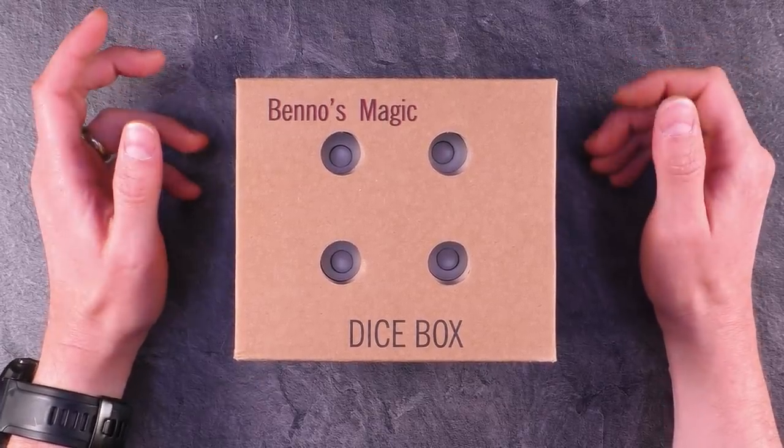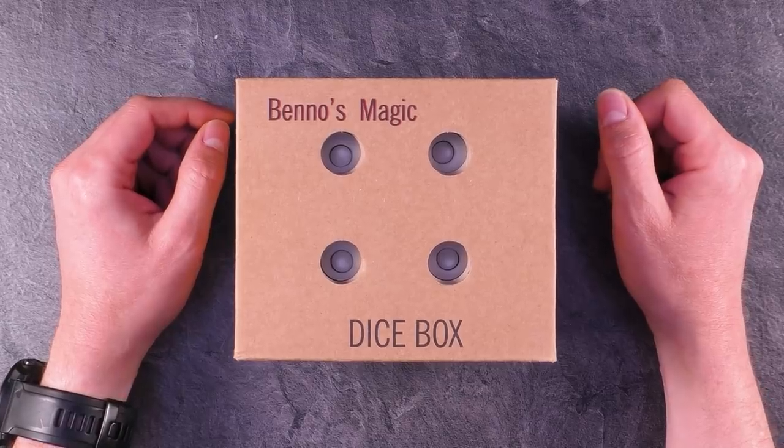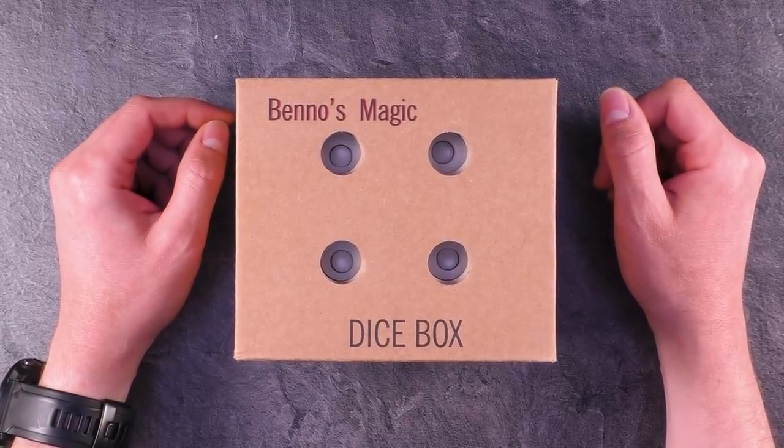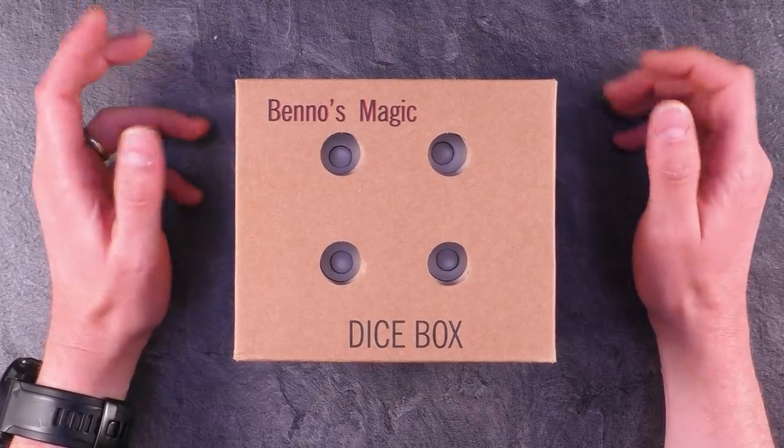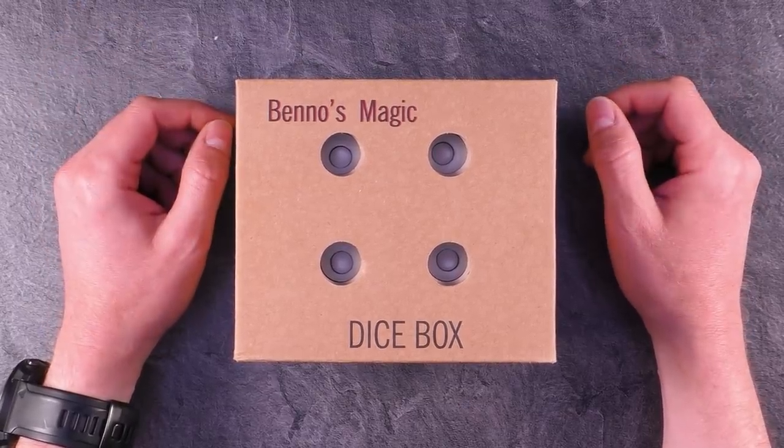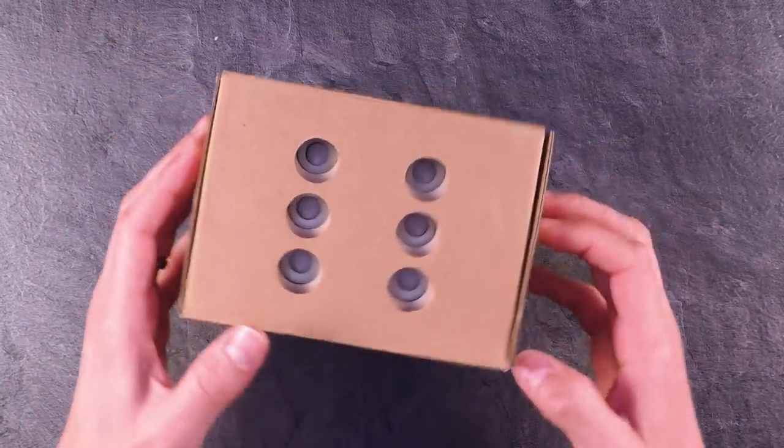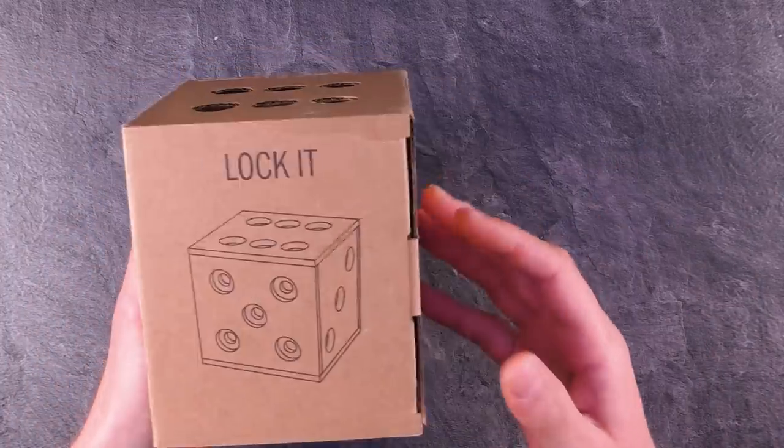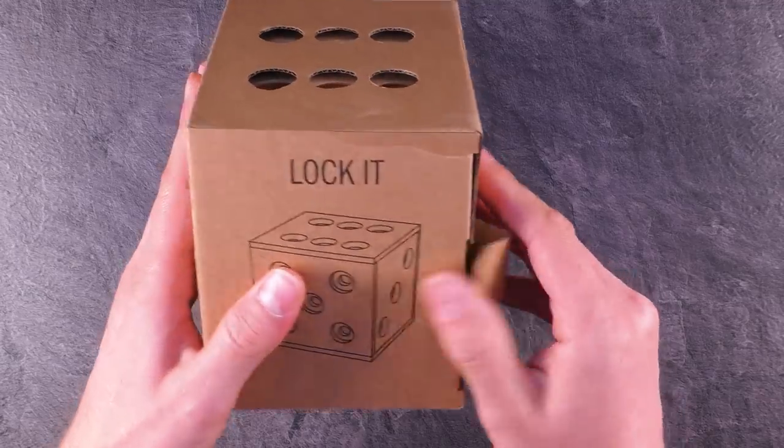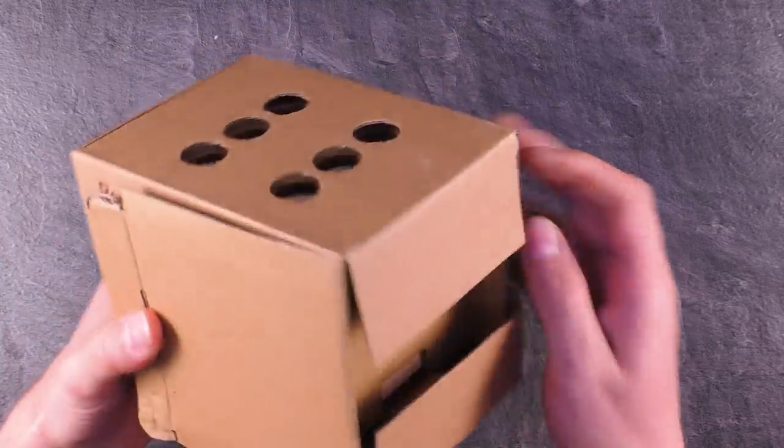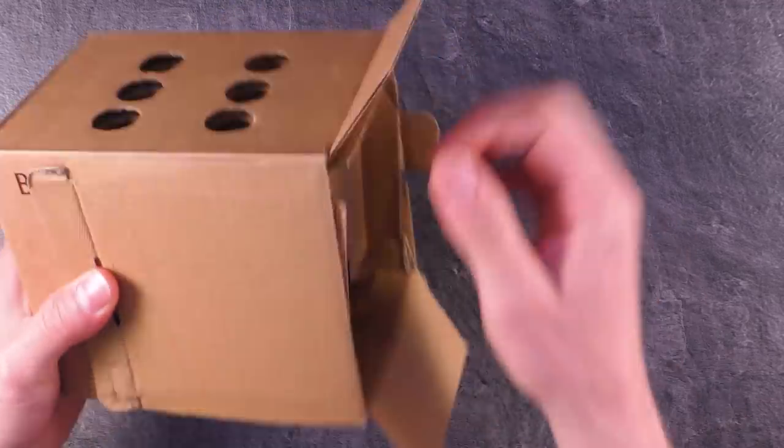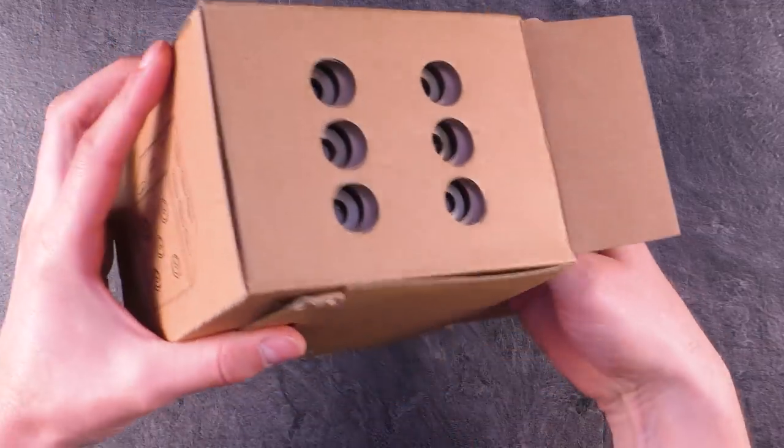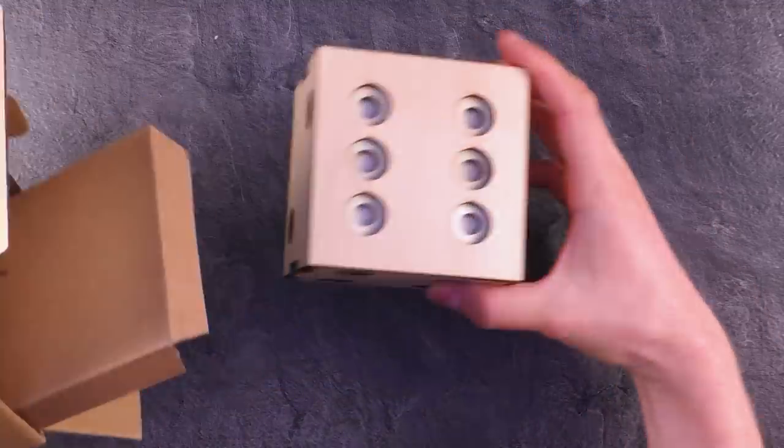The dice box was designed by Benno Bartzen from the Netherlands and is manufactured by Mr. Puzzle Australia, which is by the way not related in any kind to this channel. It's a wooden puzzle box and it looks like a dice. This is all I know about this puzzle box, so let's just get it out of the box and have a closer look.